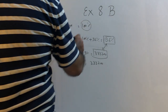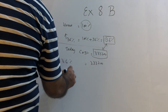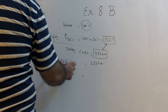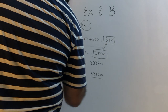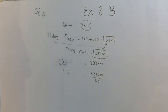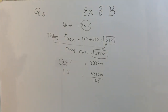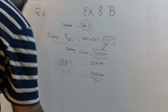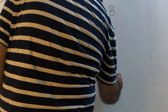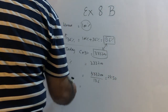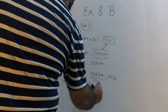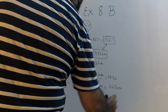To find 1 percent: divide $333,200 by 136, which gives $2,450. So 1 percent equals $2,450. To find 100 percent, multiply $2,450 by 100, which equals $245,000. That is the cost of the house when it was built.